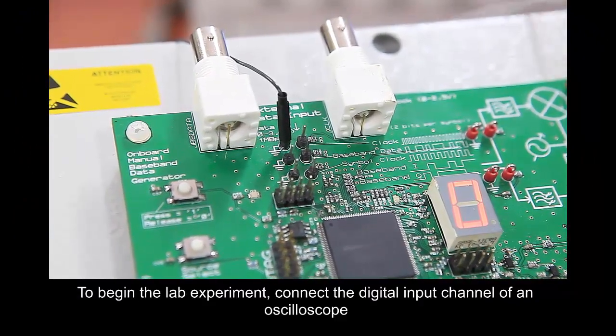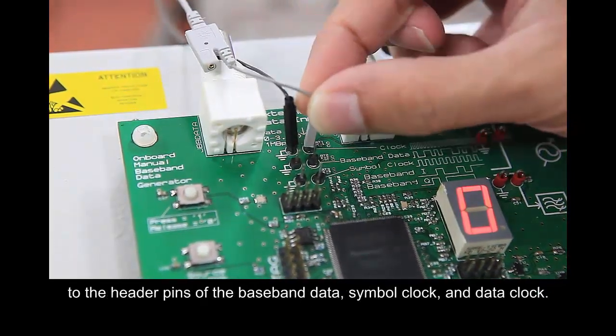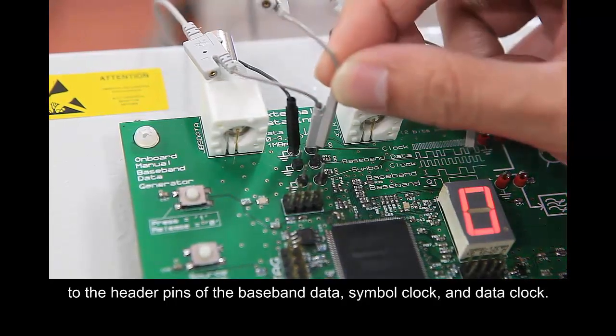To begin the lab experiment, connect the digital input channel of an oscilloscope to the header pins of baseband data, symbol clock, and data clock.